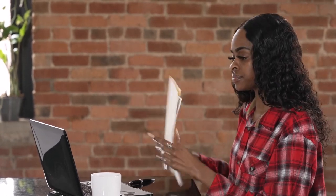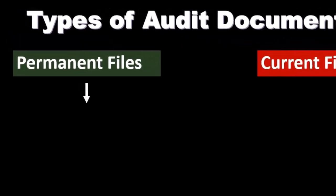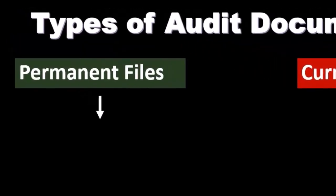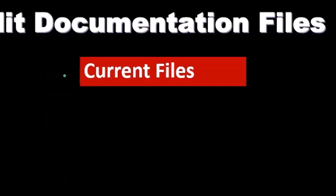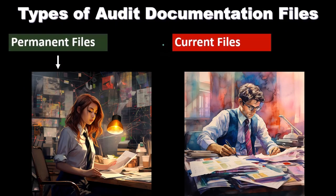Types of audit documentation files. When we store our audit documentation, we're typically going to have a client file, and oftentimes it'll be grouped in two types: a permanent file and a current file. The current file is going to be the current information that we're working on — the current audit, the current year that we're going to be working on.